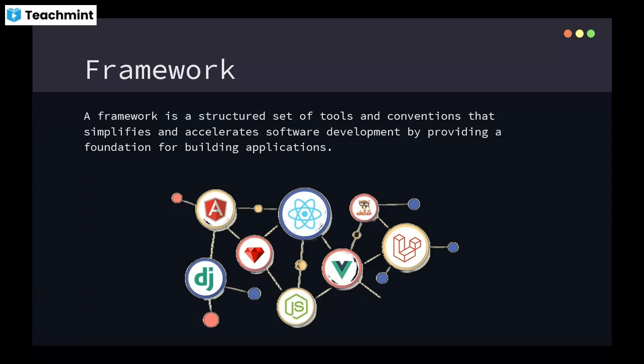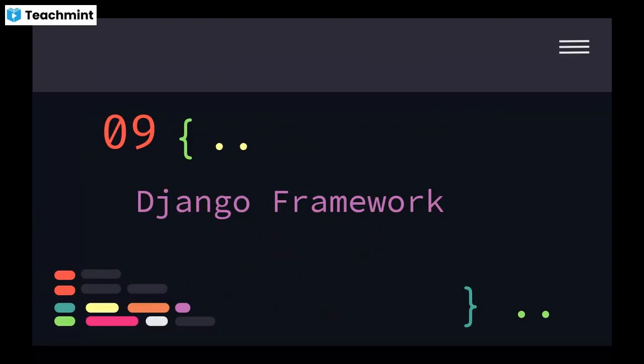Similarly, each language has advanced frameworks. For example, PHP has Laravel, and Java has Spring Boot. Every language has a framework so that there is no necessity to develop everything from scratch. These frameworks provide structure, tools, and functions.